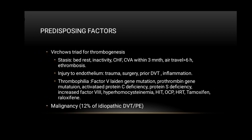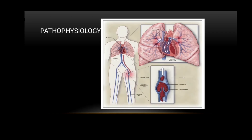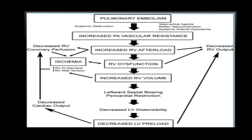Pathophysiology of pulmonary embolism: the thrombus in the deep veins gets dislodged and embolizes to the pulmonary arterial circulation, leading to pulmonary embolism. Pulmonary embolism causes increased pulmonary arterial vascular resistance, leading to increased right ventricular afterload, which causes right ventricular dysfunction and increased right ventricular volume.